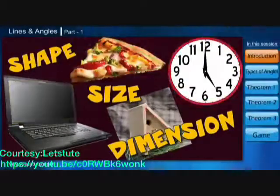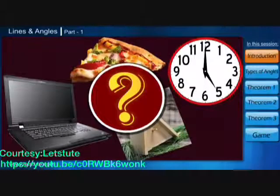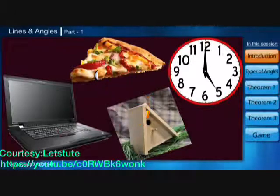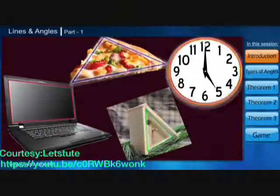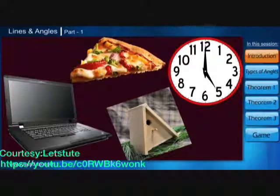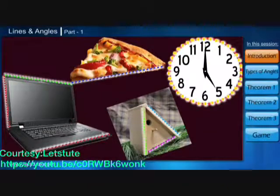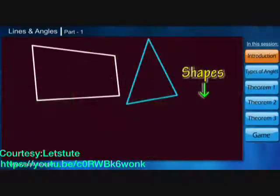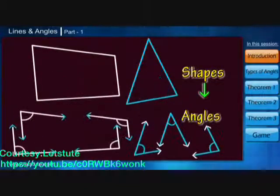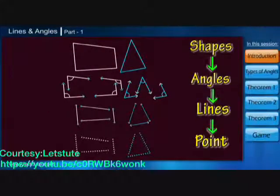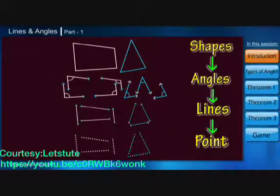Looking at these pictures, what can you understand? I'm sure many of you have identified various shapes in these images, but you never see them as a bunch of angles, a few lines, or just a cluster of points. When we break down all these shapes, it comes down to angles, further we get lines, and at the end we have a point. So today, instead of learning shapes as a whole, let's learn the various elements that form these shapes.